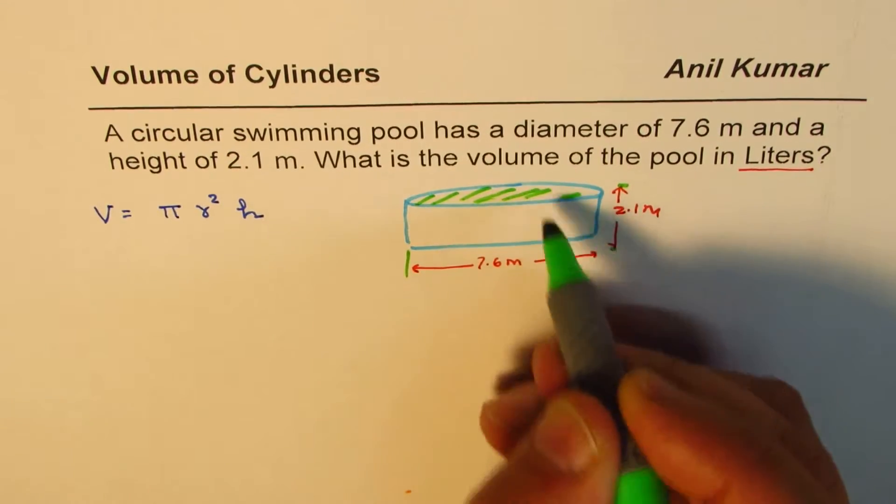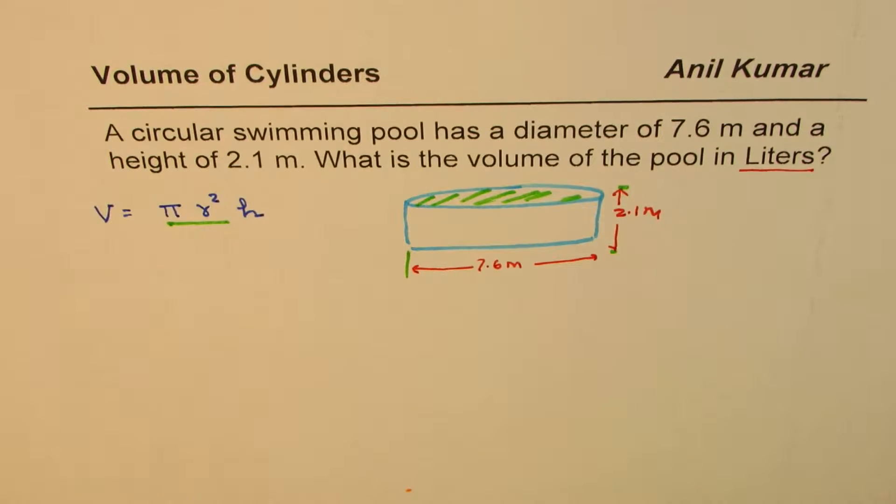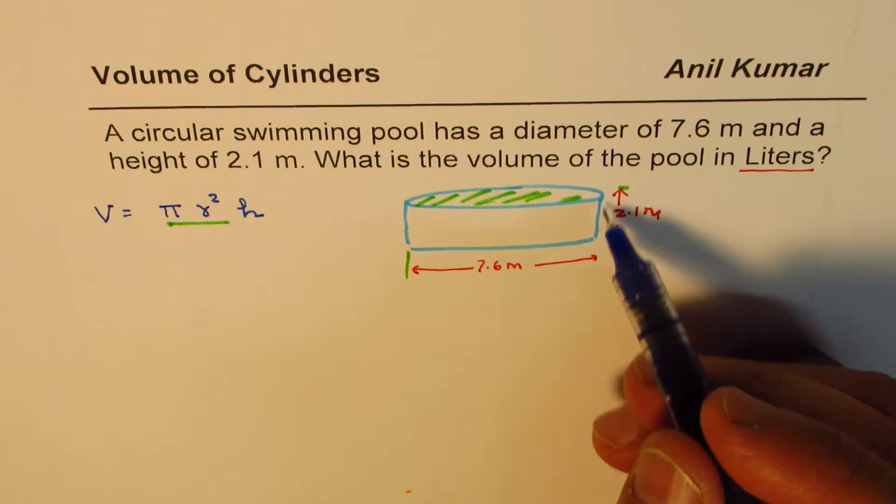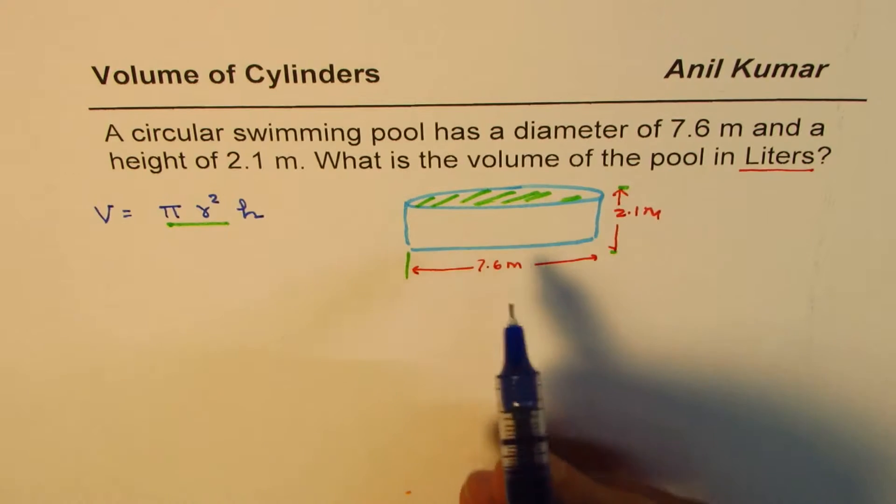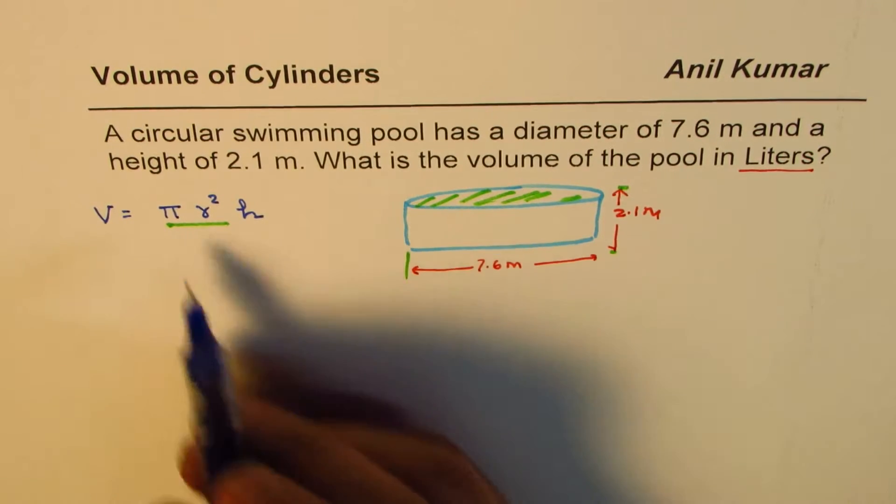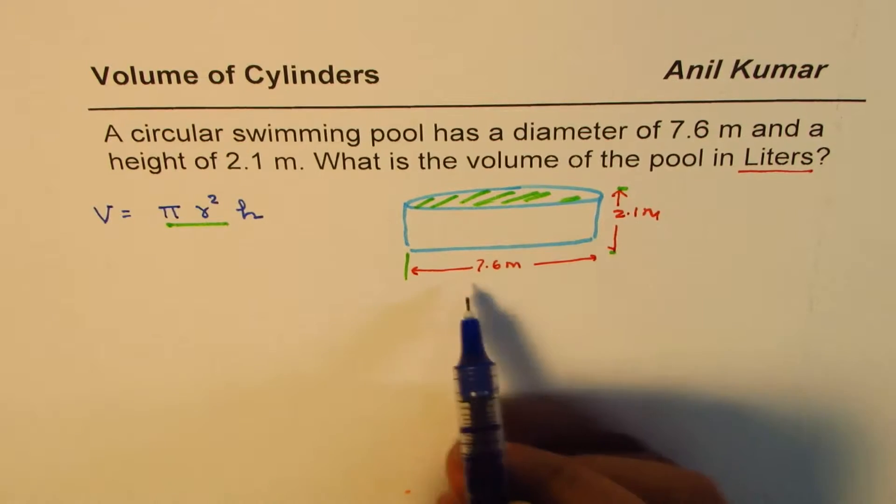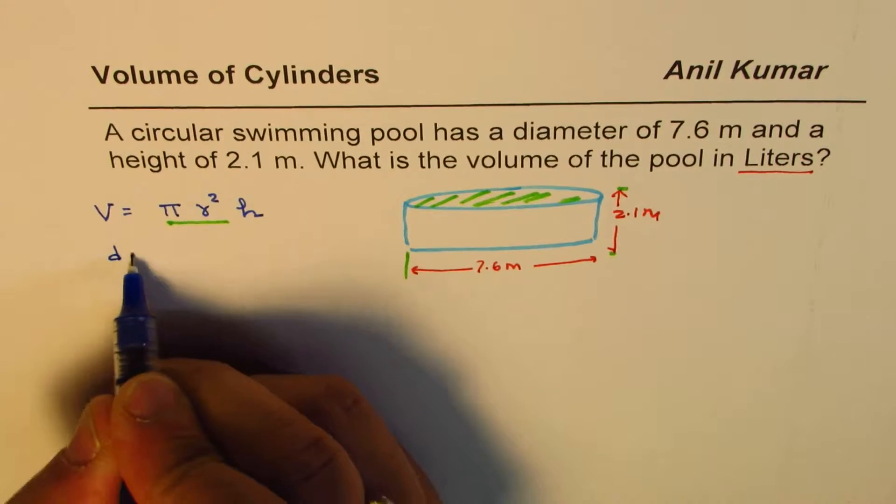So let me just shade this area. That is the π r² part, and then when you multiply it by the height you get the volume or the capacity of this particular pool. So whenever you have a cylindrical kind of pool with circular base, that's the formula to be used.